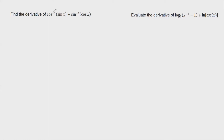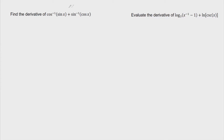I want to emphasize that whenever you see cosine raised to negative one, that only means I'm taking the arc cosine — the inverse of cosine — instead of saying this is one over cosine. From here on out, I'll use this expression to mean the inverse of any trigonometric function, not raising it to its negative one power.